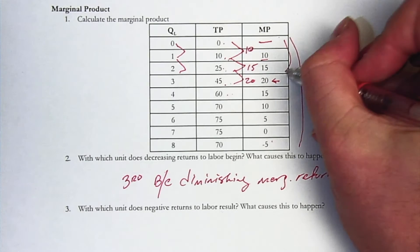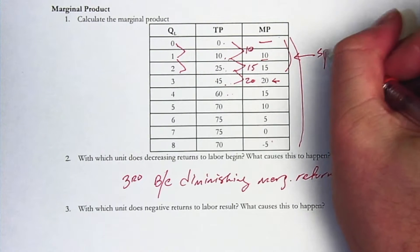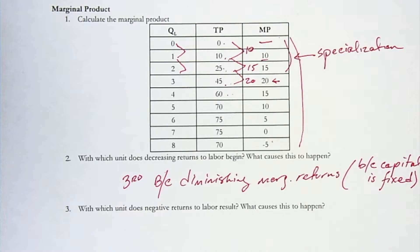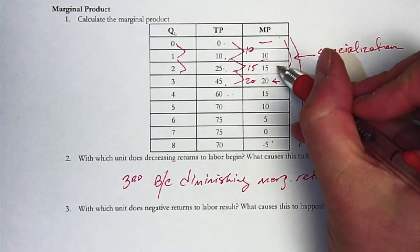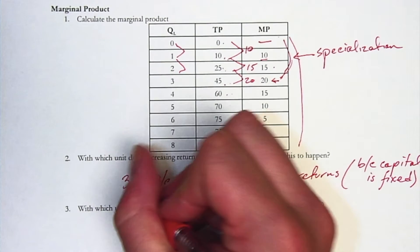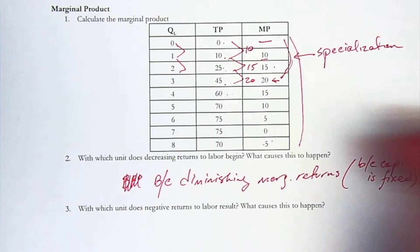And we know that the increase for the first two workers happened because of specialization. So these first couple of workers generated additional units. In fact, that second worker increase and the third worker increase happened. Sorry, that's not with the third worker. That's actually with the fourth worker.